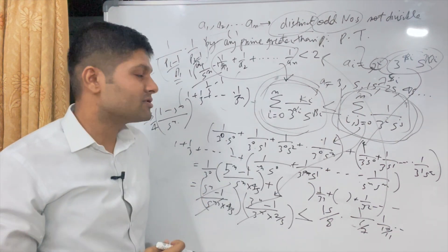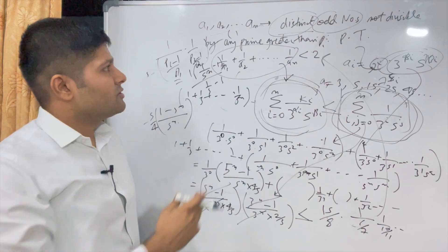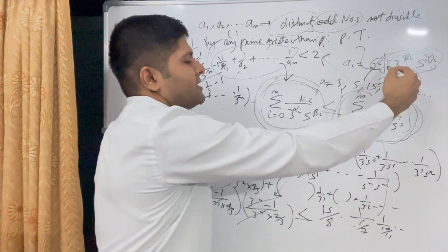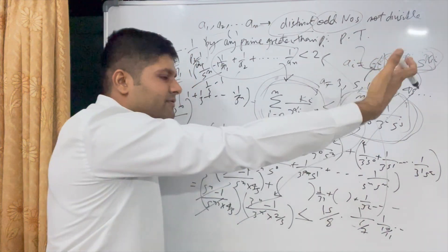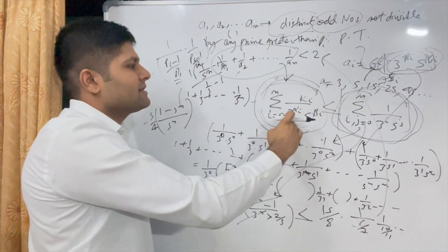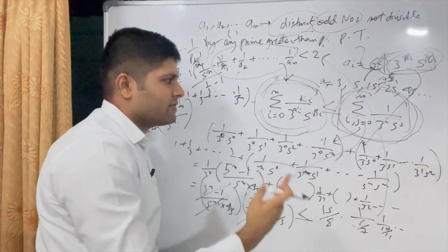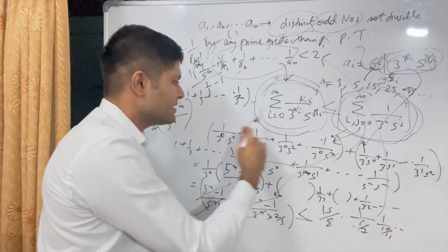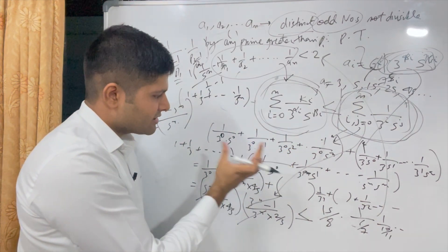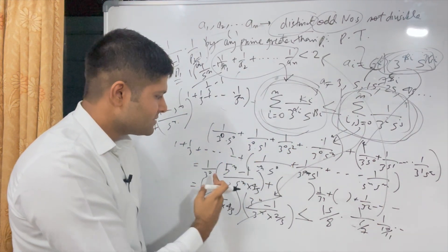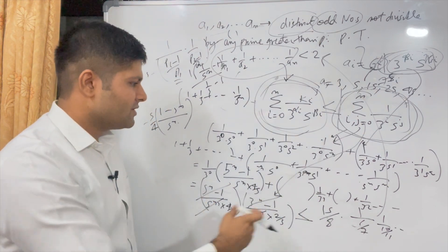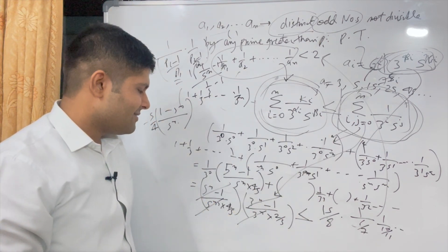The main idea used here was: since these are odd numbers, they can be written as powers of 3 and 5. The sum of their reciprocals is less than the sum of all possible reciprocals of numbers of this format. We factorized and separated those terms, got a nice product of geometric series, and summed to get the result 15/8.